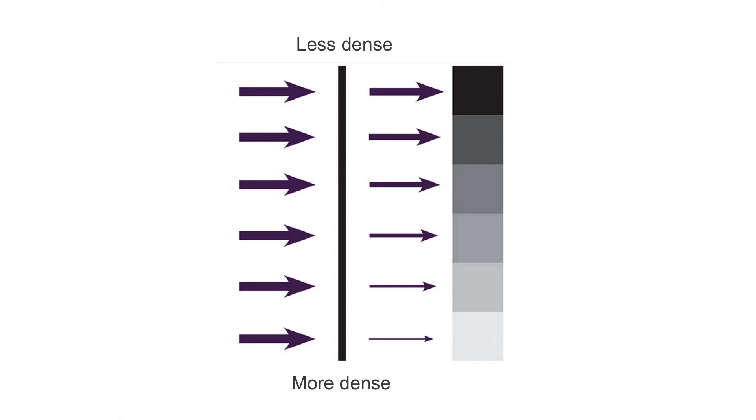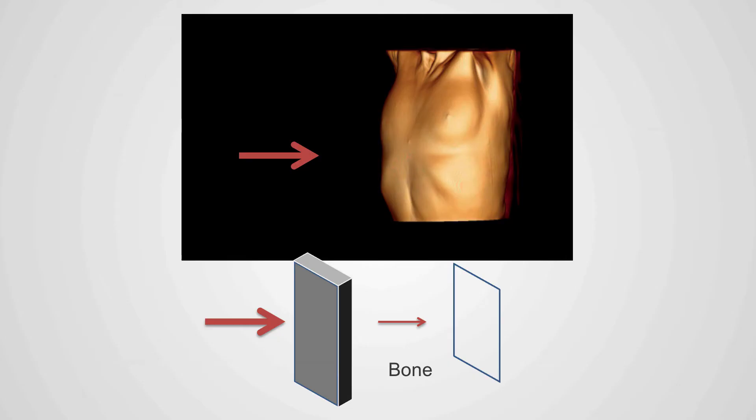On this image, we see what happens with the x-ray beam as it goes through tissues of various density. At the very top, we see the x-ray beam going through less dense tissues. Because the tissue is less dense, less of the x-ray radiation is absorbed and the image is black. If on the other hand, we look at more dense tissue, as the x-ray goes through the dense tissue, most of the x-ray beam will be absorbed and the resulting image will be white.